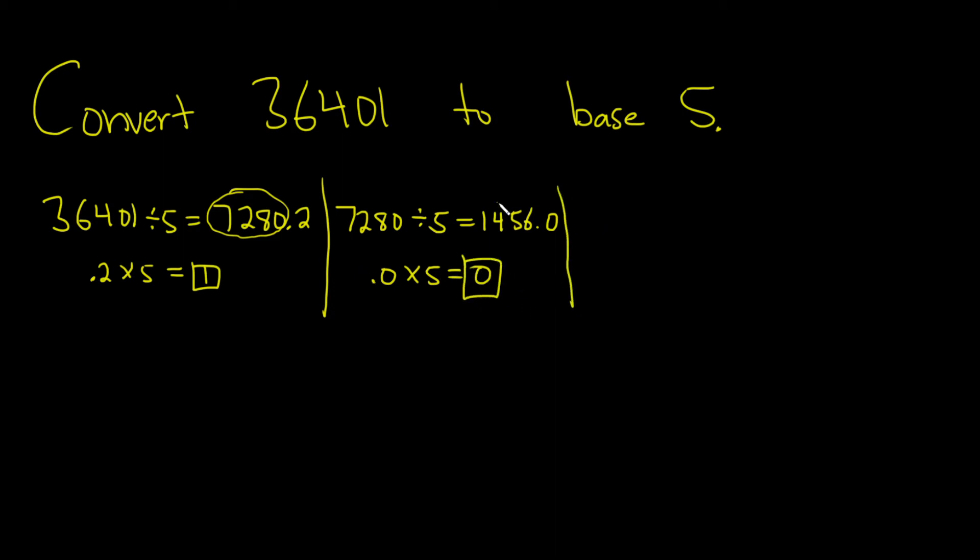Then you do it again. You take this number, divide by 5. 1456 divide it by 5. So we get, we have a remainder of 1, I believe. So 291.2. Yep, and then take 0.2, multiply it by 5, and that gives you 1.